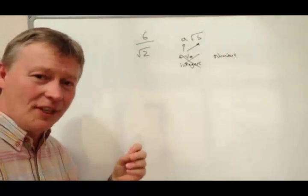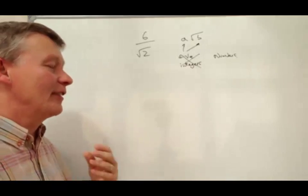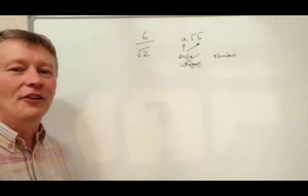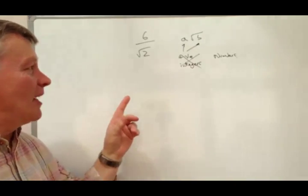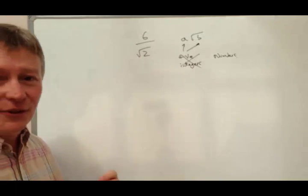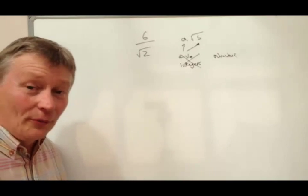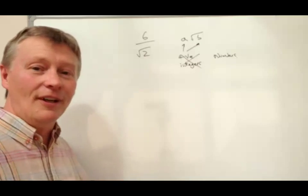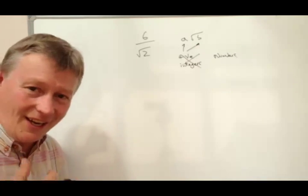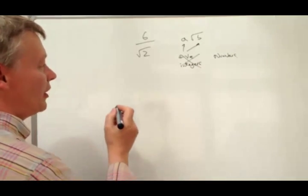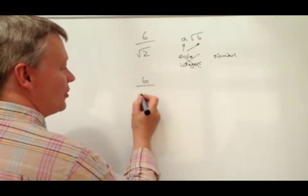So, the thing about dealing with a fraction, particularly a fraction with a surd, is there's a particular thing called rationalizing the denominator. And what that means is that we're going to make this into a whole number. Well, the way that we do that is we're going to multiply the top and bottom by the same. Now, if we do that, we can use one of the surd rules.